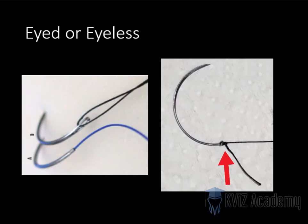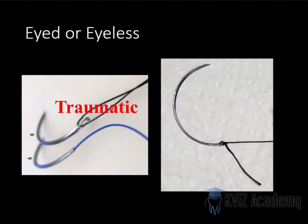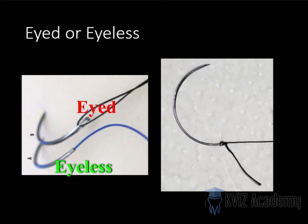Whereas this one — we have crushed the end, so this is thinner than this. So it will pass easily. This eyed needle is more traumatic and this eyeless needle is less traumatic. So this is the eyed needle, and this is the eyeless needle.